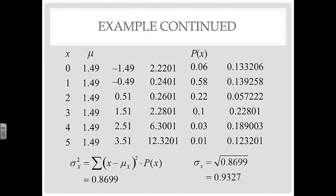Then we take the square root of that to get our standard deviation. We get 0.9327. So the standard deviation of this distribution of DVDs that have been rented is 0.9327.